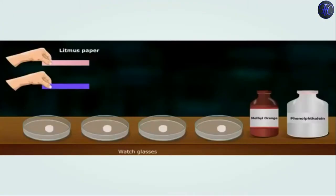We have four indicators: blue litmus paper, red litmus paper, methyl orange and phenolphthalein. You are already familiar with litmus paper and how it reacts with acids and bases. You may not be familiar with methyl orange and phenolphthalein, and in this video lecture you will learn how these two indicators react with acids and bases.